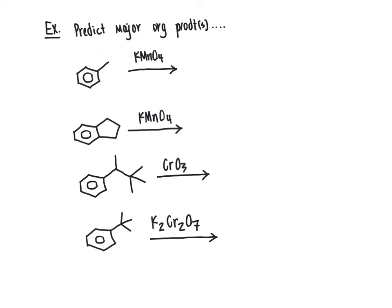Looking at our first reactant, toluene, reacted with potassium permanganate KMnO4 — recognizing that we have an oxidizing agent treating a molecule that has a benzylic alkyl group — we recognize that the benzylic carbon is going to be oxidized to form a carboxylic acid, so COOH goes right there. This is how we convert toluene into benzoic acid. As a fun aside, benzoic acid is a common preservative, and its deprotonated form, benzoate, such as sodium benzoate, is also commonly seen as a preservative.